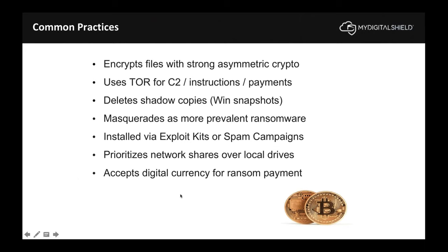Often ransomware is delivered via off-the-shelf crimeware exploit kits — people can buy the kits and launch their own campaigns without knowing how to code. Ransomware also wreaks havoc by looking for network shares, encrypting mapped drives. In the modern era, tools like OneDrive and Google Drive map themselves as local drives, so ransomware can infect cloud-based storage systems too. Those are common practices across most ransomware families.